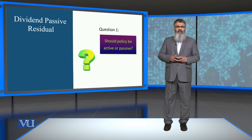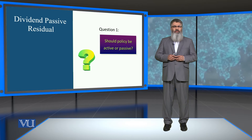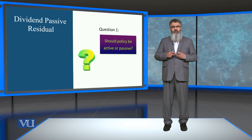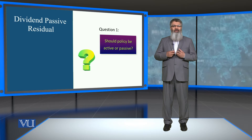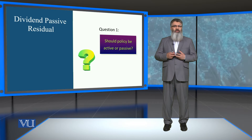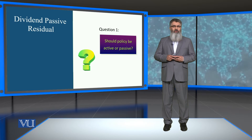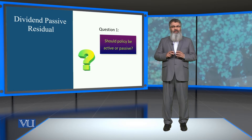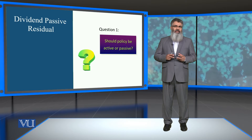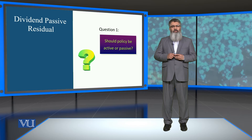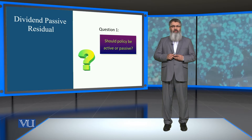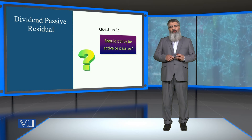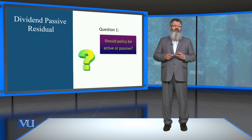The word passive means something which is not active, something which is not moving, something which is not driven by a particular objective. That variation exists in the Active Dividend Policy, where we have certain objectives and certain targets to meet, and a policy is set accordingly. With reference to Passive Dividend Policy, it also has a specific meaning — we call this the dividend passive residual.